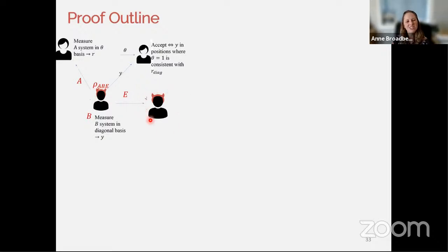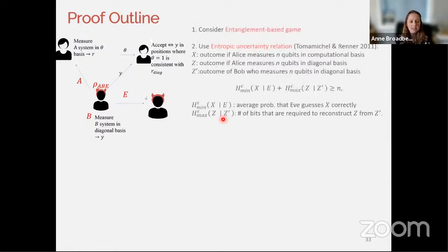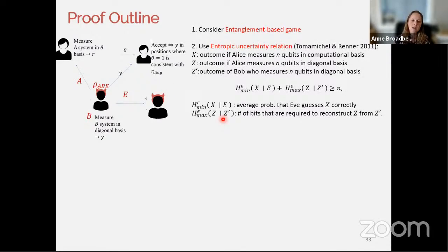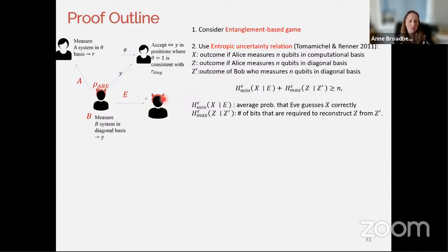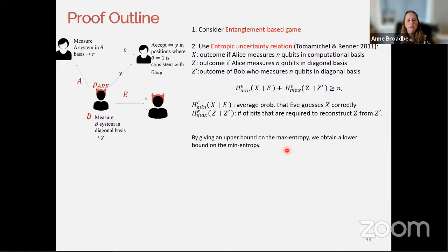System A is sent to the originator who measures to get string r; system B is measured to get the candidate proof of deletion y; and E is the register held by the adversary. Bounding the probability of winning this game also bounds the probability of winning the original game. We apply entropic uncertainty relations — the same ones used in QKD security proofs — because the E system is similar to the QKD scenario where we show E is independent of the established key.